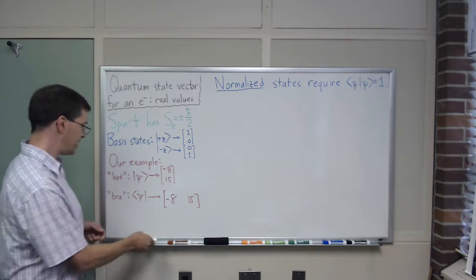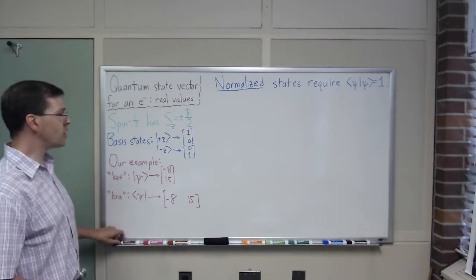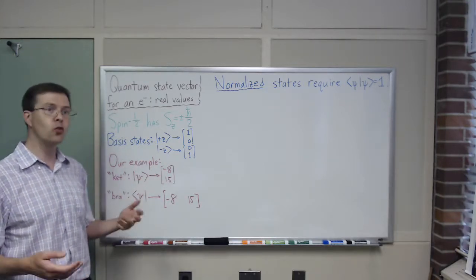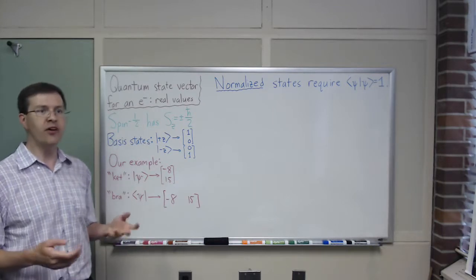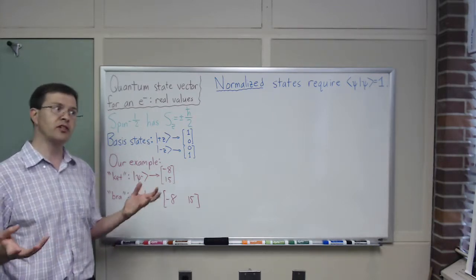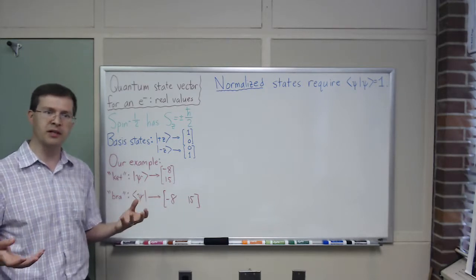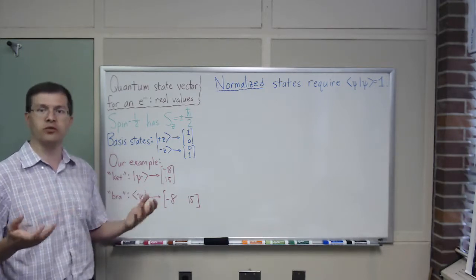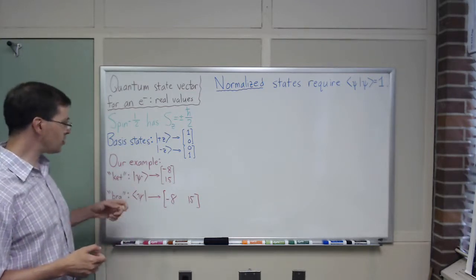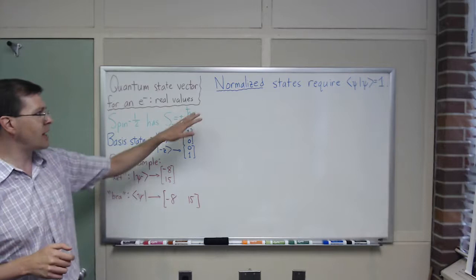Maybe the starting place is to say that we want to look at normalization of a state, because it turns out that in a great many applications, it's very helpful to start with a normalized state. Normalization, roughly speaking, will mean that the total probability equals 1, and that's something important when you're trying to interpret these things.